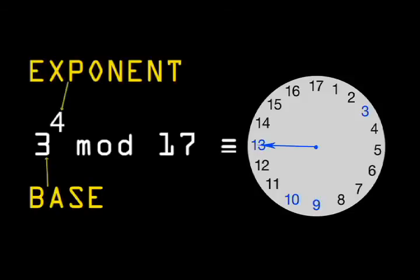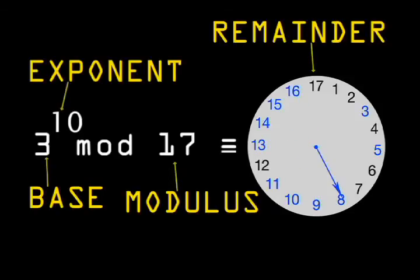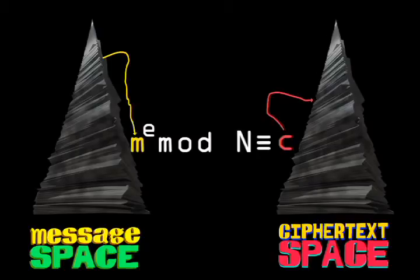Take a number, raise it to some exponent, divide by the modulus, and output the remainder. This can be used to encrypt a message as follows. Imagine Bob has a message which is converted into a number, m. He then multiplies his number by itself, e times, where e is a public exponent. Then he divides the result by a random number, n, and outputs the remainder of the division.